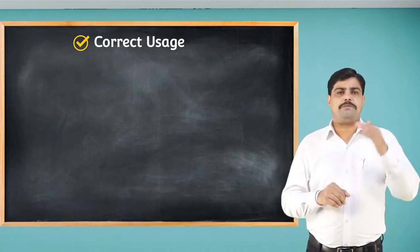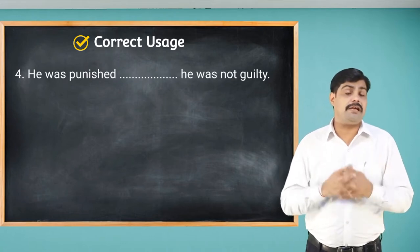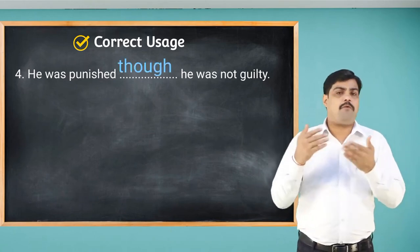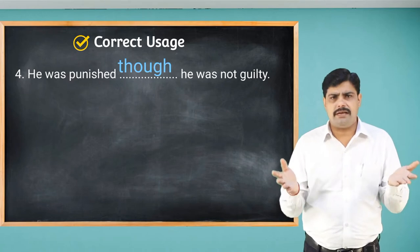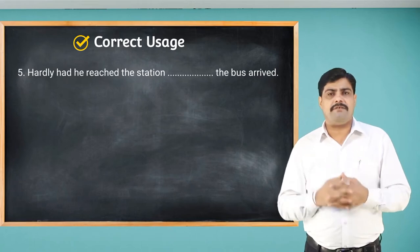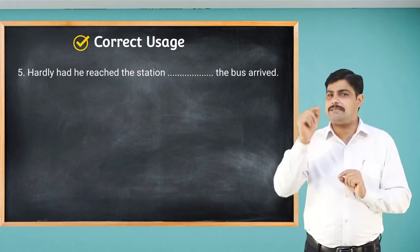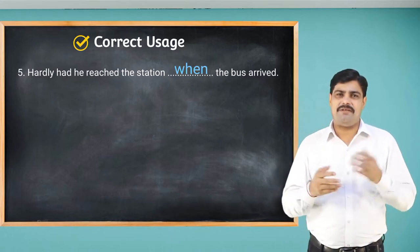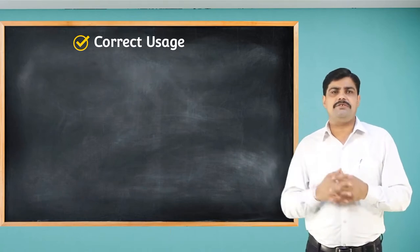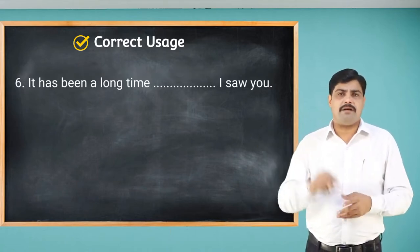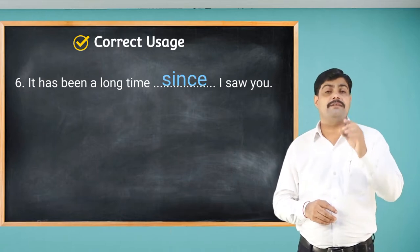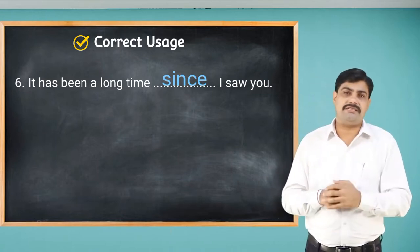'He was punished ___ he was not guilty' — contrast, so use 'though': 'He was punished though he was not guilty.' 'Hardly had he reached the station ___ the bus arrived' — 'hardly' always takes 'when': 'Hardly had he reached the station when the bus arrived.' 'It has been a long time ___ I saw you' — use 'since': 'It has been a long time since I saw you.'